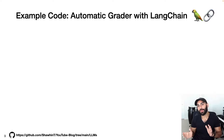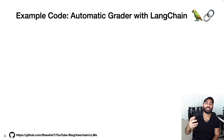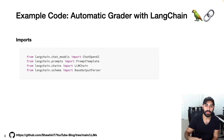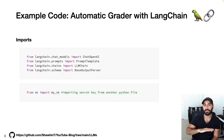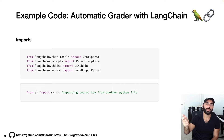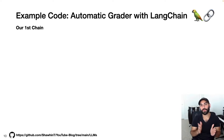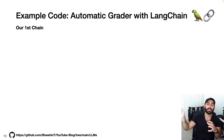Everything we've talked about applies to both the easy way and the less easy way of prompt engineering. Now I want to focus on the less easy way and demonstrate its power by building the automatic grader using the Langchain Python library. First, we do some imports from Langchain. We'll also be using the OpenAI API, which requires a secret key — check out the previous video for details on that. Langchain provides a ton of boilerplate code that makes it easy to incorporate calls to large language models within your Python code.